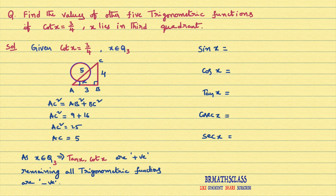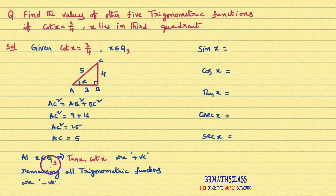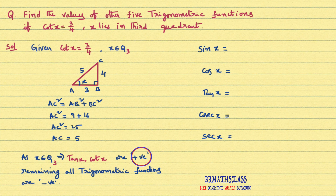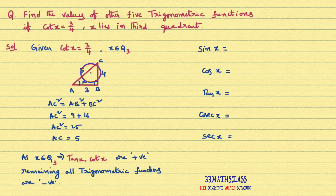Now I have the hypotenuse of this right angle triangle as 5. As mentioned, X lies in third quadrant. In the third quadrant, tan x and cot x are positive — we learned this in previous classes. All remaining trigonometric functions are negative.